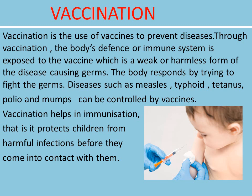Vaccination is the use of vaccines to prevent diseases. Through vaccination, the body's defense or immune system is exposed to the vaccine, which is a weak or harmless form of the disease-causing germs. The body responds by trying to fight the germs. Diseases such as measles, typhoid, tetanus, polio and mumps can be controlled by vaccines. Vaccination helps in immunization — that is, it protects children from harmful infections before they come into contact with them.